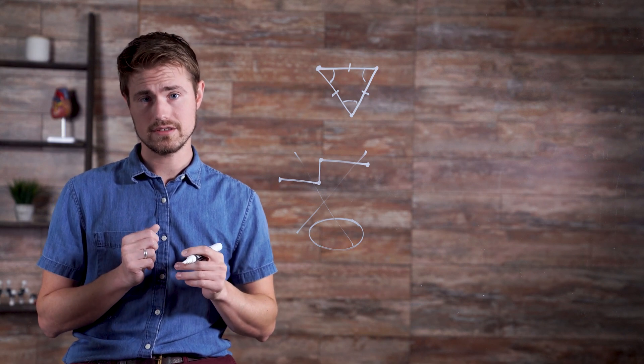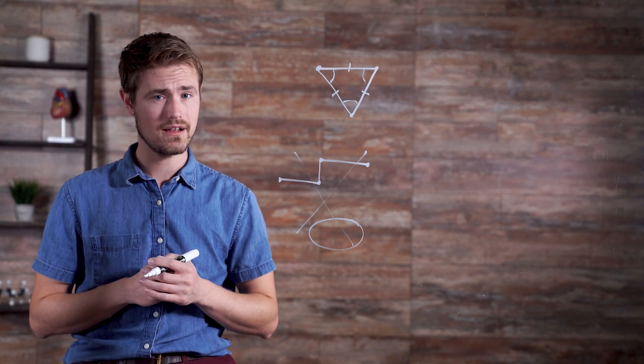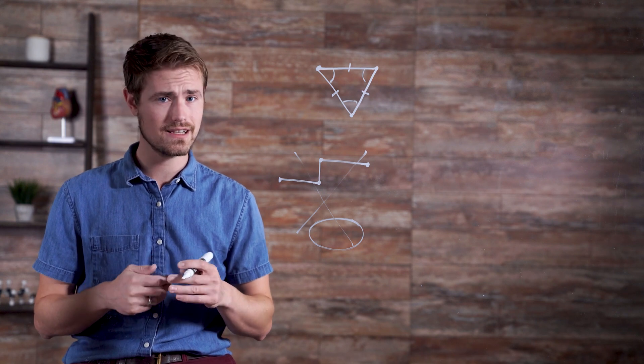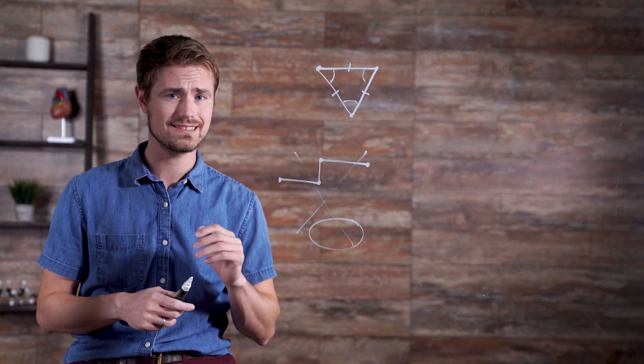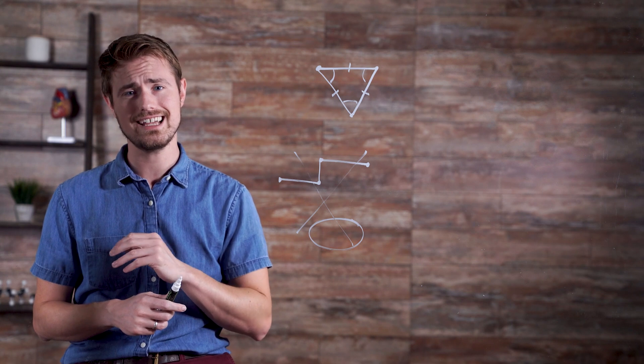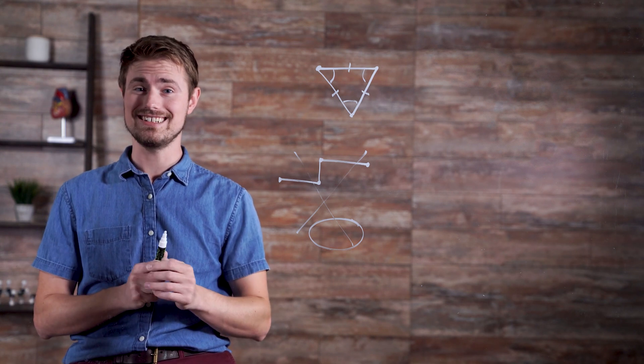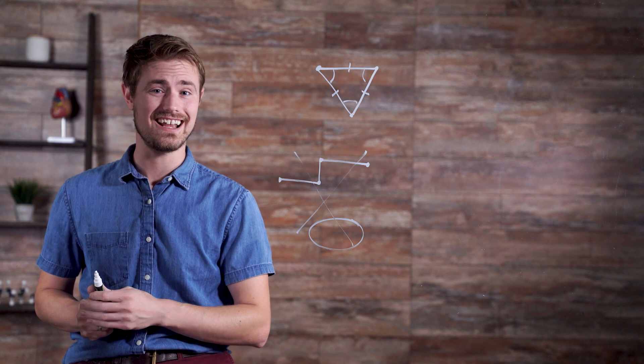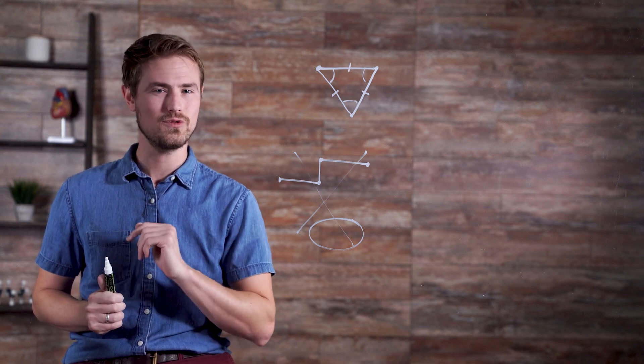Some common polygons are quadrilaterals, which have four sides. Pentagons, which have five sides. Hexagons, six sides. Heptagons, seven sides. Octagons, eight sides. Nonagons, nine sides. Decagons, ten sides, and dodecagons, which have 12 sides.